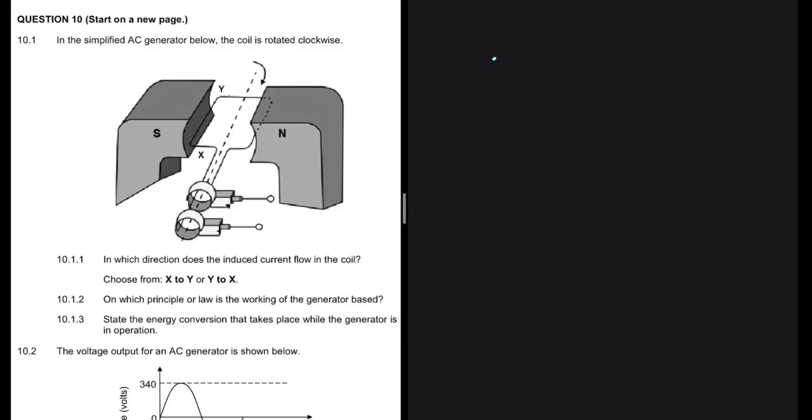In which direction does the induced current flow in the coil? Choose from X to Y or Y to X. We are told in the question statement that we have an AC generator, so which hand rule does an AC generator use?